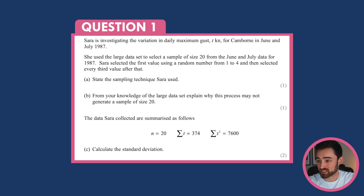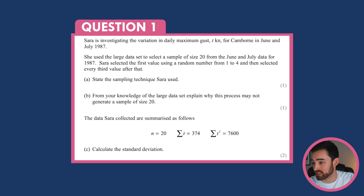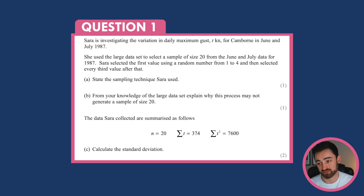Edexcel Sample Assessment Materials for AS Mathematics. This is Paper 2 for Year 12s, which is stats and mechanics. Question 1 says: Sarah is investigating the variation in daily maximum gust T for Kanban in June and July 1987. She used a large data set to select a sample of 20 from June and July data for 1987. Sarah selected the first value using a random number from 1 to 4, then selected every third value after that. State the sampling technique Sarah used.